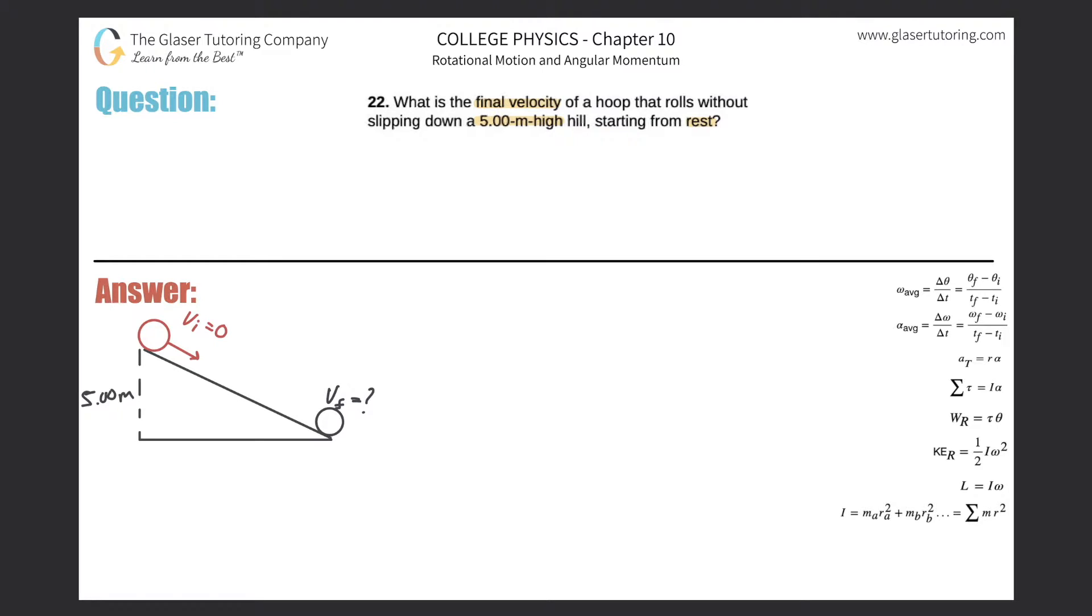Now, first thing is we have to define this pretty well. What does it mean by final velocity? Because you might say, well, there's angular velocity and there's tangential velocity. There's linear velocity. What's going on? So they would have specified if they wanted angular velocity. If they just use the term final velocity, they're just looking for the linear velocity.